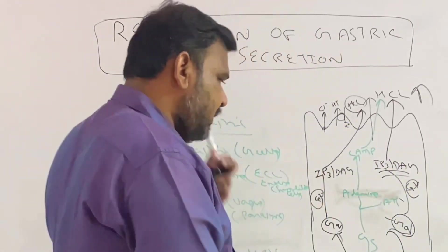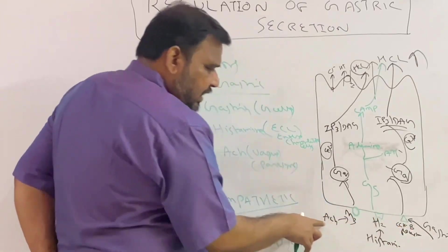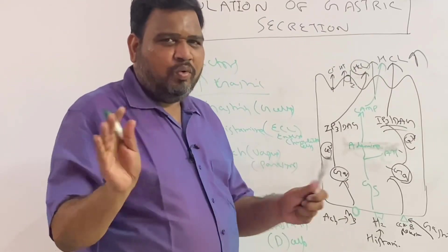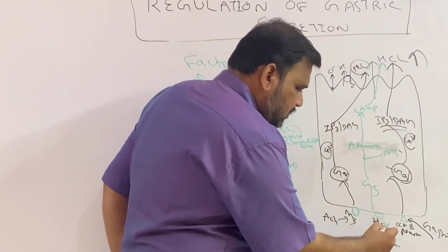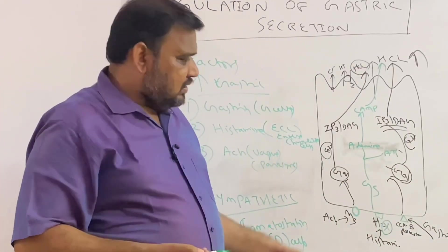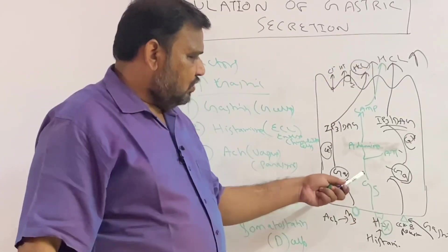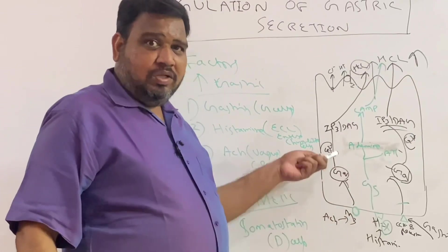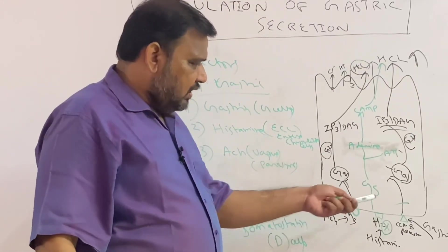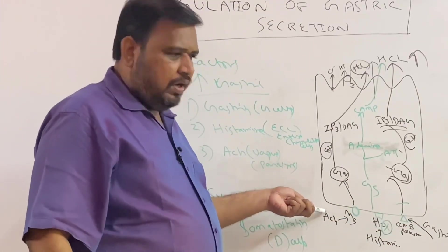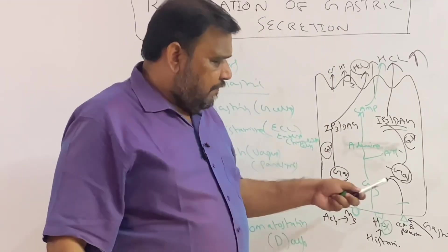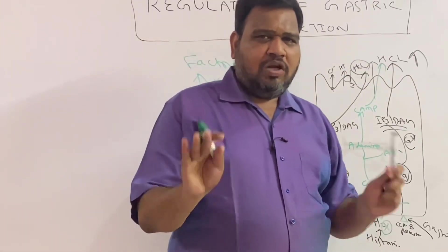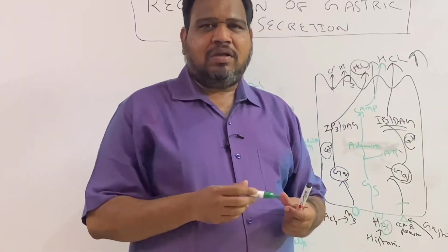The reason histamine is the most potent is that gastrin and acetylcholine follow the same GQ → IP3-DAG pathway. If you block the H2 receptors, the entire Gs pathway is gone — there is no Gs stimulation, no cyclic AMP. However, if you block either gastrin or acetylcholine, the other GQ pathway is still active. So blocking histamine has a much greater inhibitory effect on HCl secretion than blocking the others.